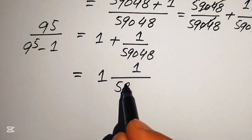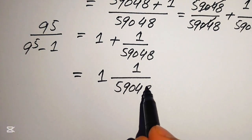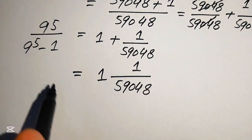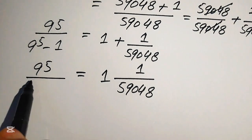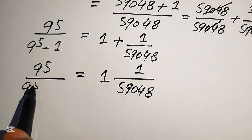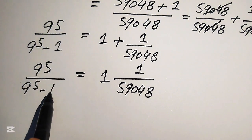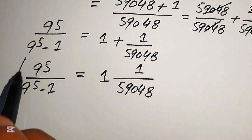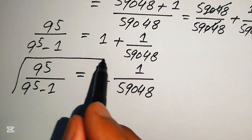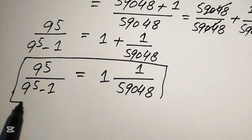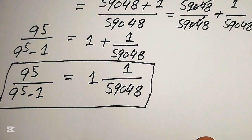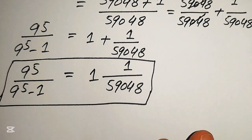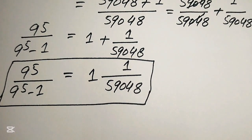Combining these terms as a mixed fraction, the final value of 9 to the power of 5 divided by 9 to the power of 5 minus 1 equals 1 and 1/59,048. This is the final answer. Thank you for watching — please subscribe to my channel for more exciting videos.